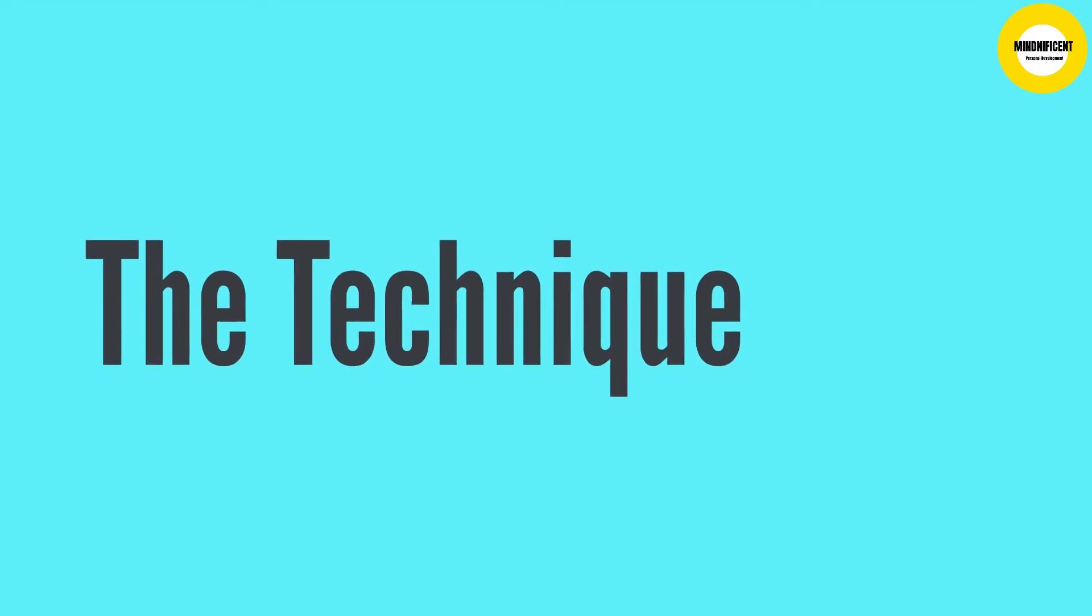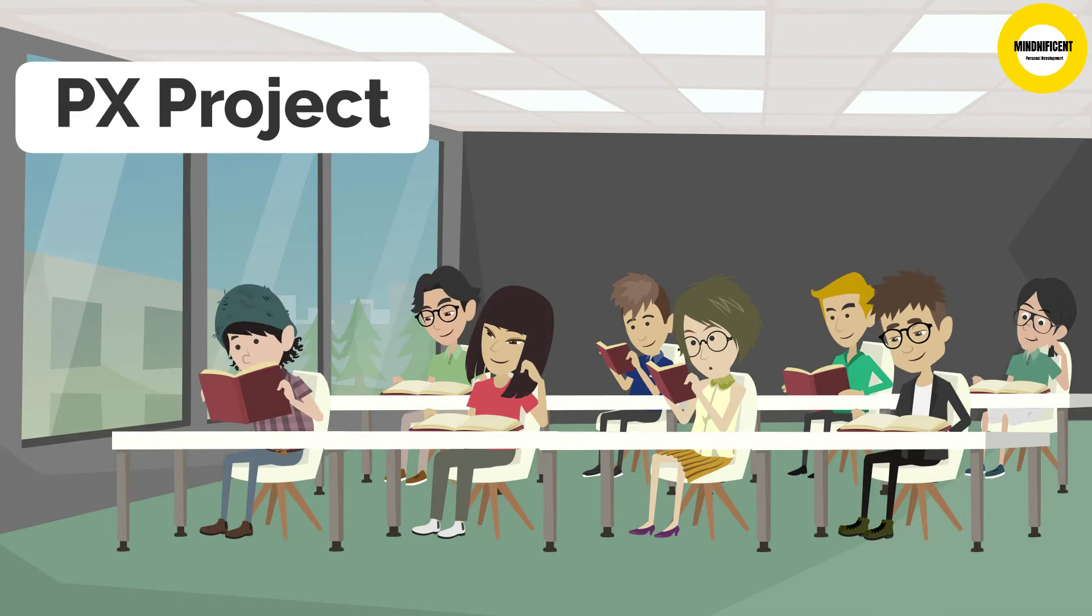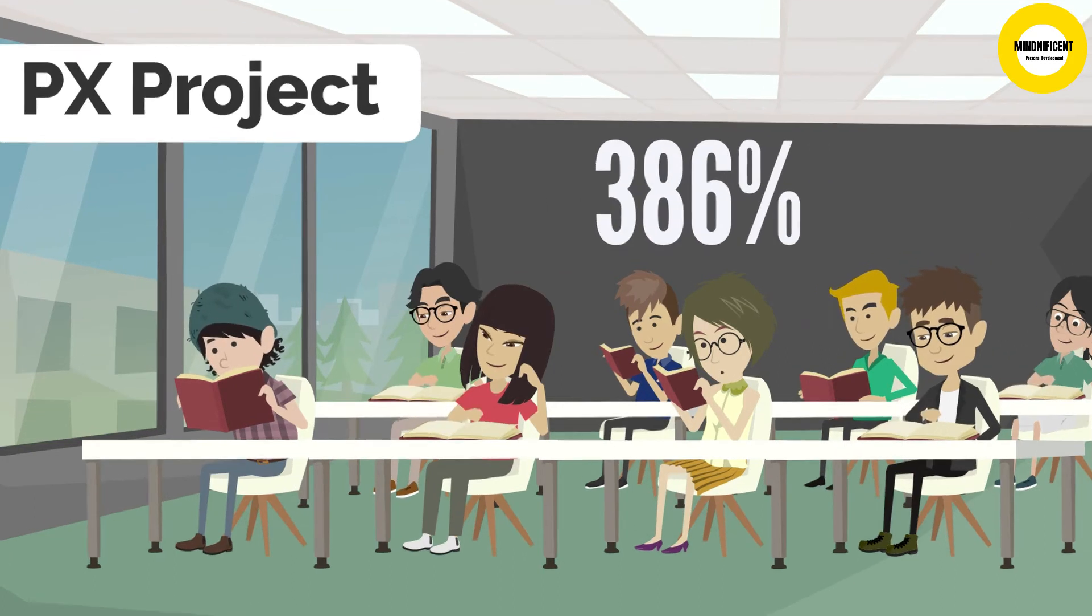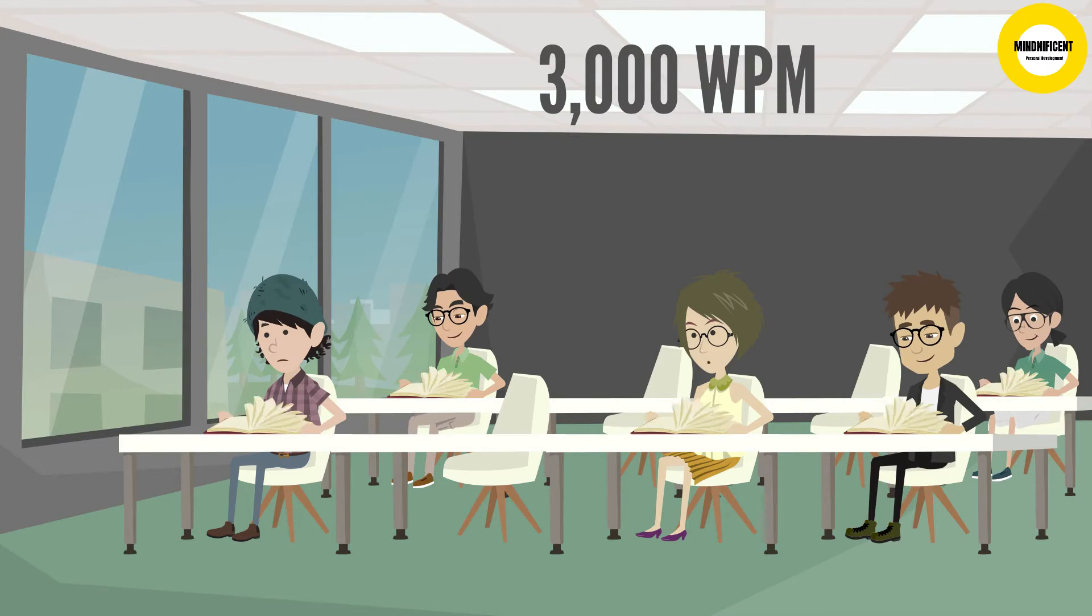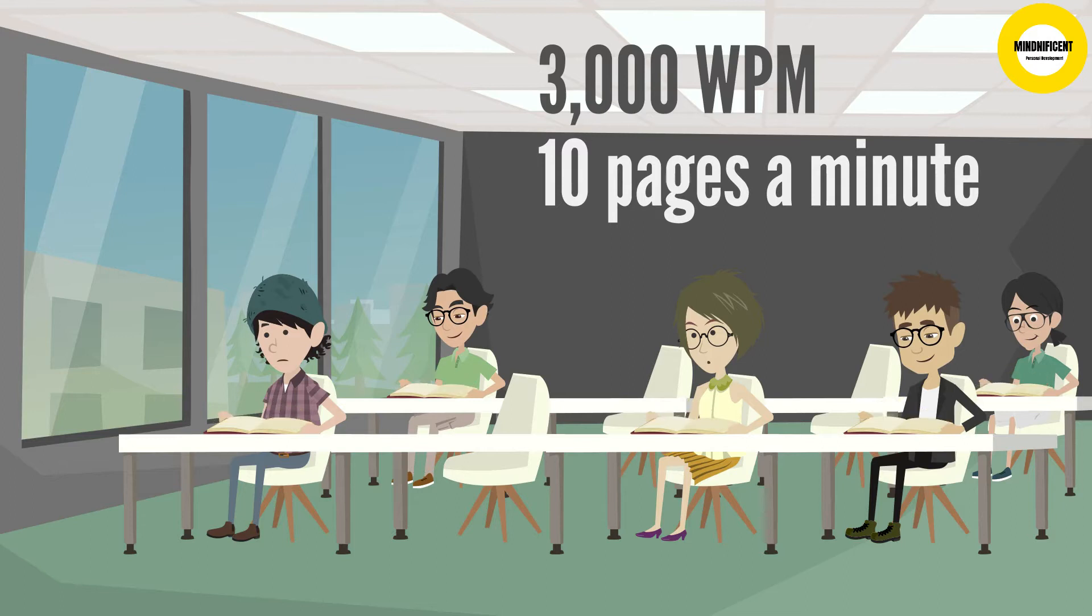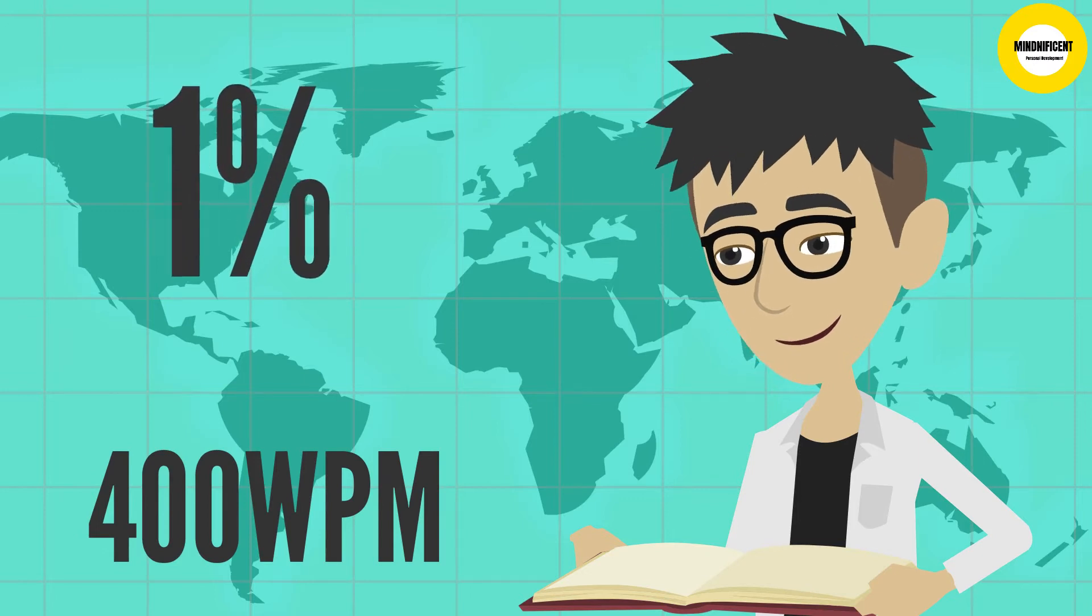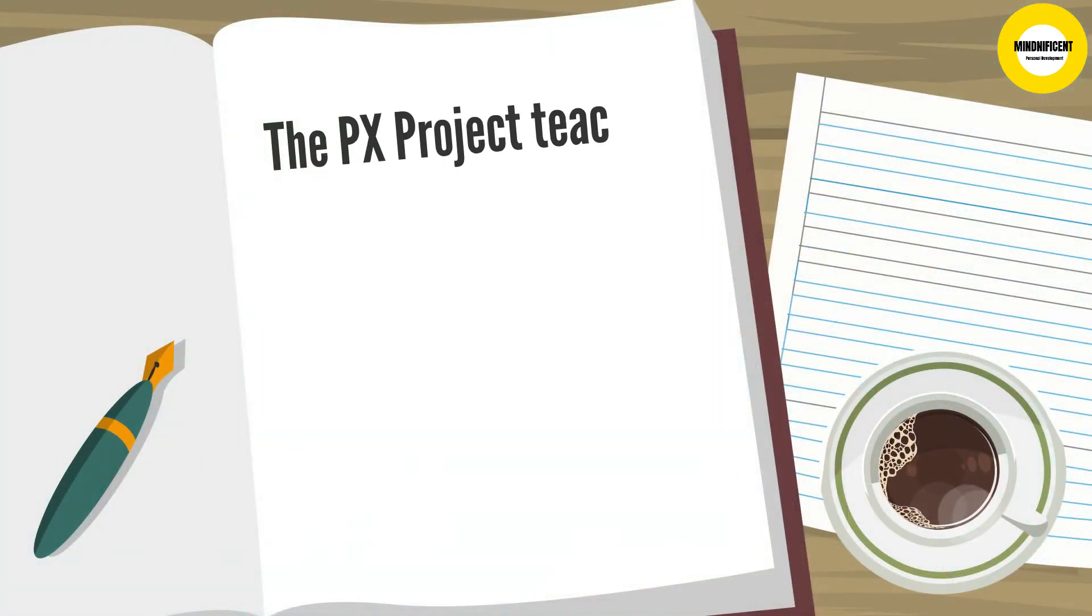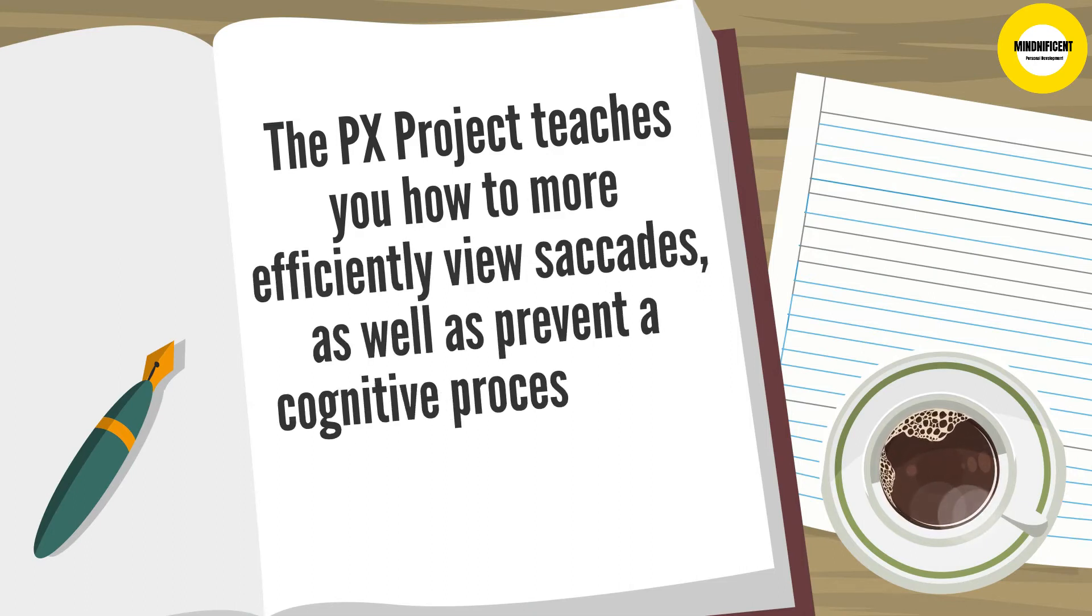The technique. There is something called the PX Project. It's a cognitive experiment that increases the average reading speed of participants by 386%. With enough practice, certain individuals have clock speeds of almost 3,000 words per minute, which is absolutely insane. That's around 10 pages a minute or a page every 6 seconds. It seems unbelievable when you consider that reading at 400 words per minute puts you in the top 1 percentile of the population. The PX Project teaches you how to more efficiently view saccades, as well as prevent a cognitive process called regression.